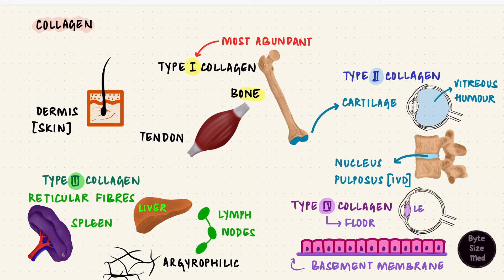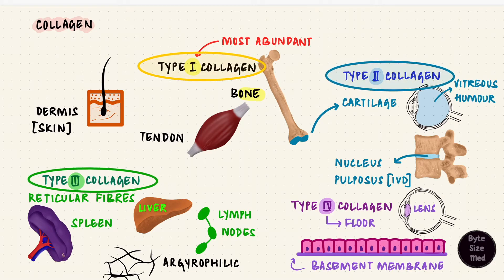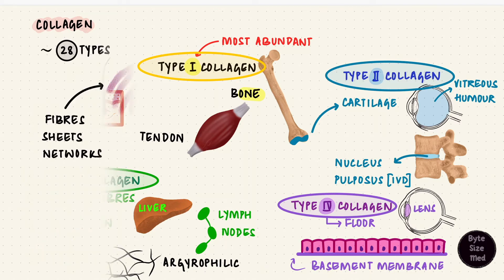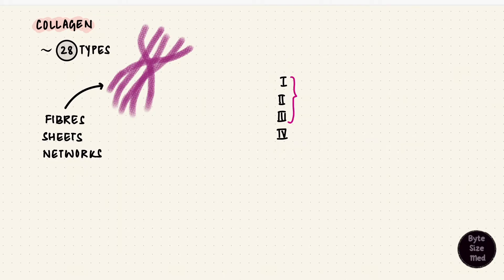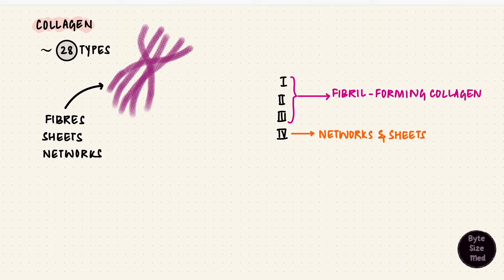Type 4 collagen is also found in the lens of the eye. So that's types 1, 2, 3, and 4. Remember there are lots of different types of collagen with different locations and functions. For example, type 7 collagen forms anchoring fibrils in the basement membrane. Types 1 to 3 form fibrils — they are fibril-forming collagens — but type 4 forms networks or sheets. The most studied collagen is type 1, and it does form fibrils.